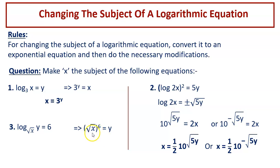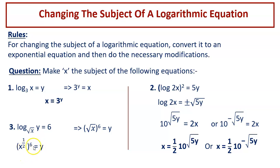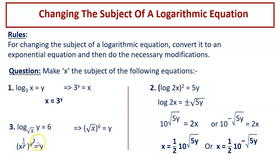We need x as the subject, so we write square root of x in index form as x to the power of half. So it becomes x to the power of half, whole raised to the power of 6, equals y. Using the law of indices — e to the power m, whole raised to the power n equals e to the power m times n — we multiply: half times 6 gives 3. So x to the power of 3 equals y.